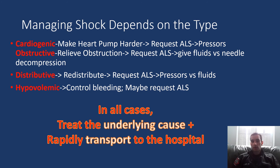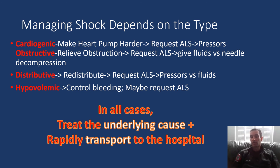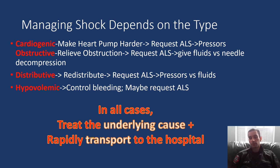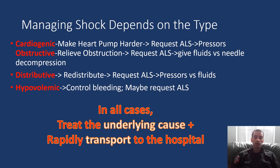For obstructive shock, the treatment is to relieve the obstruction. In cardiac tamponade, ALS can give fluids to slow the progression, but ultimately a physician needs to drain the effusion — so get to an ER. For tension pneumothorax, a paramedic can perform needle decompression. If you're close to the hospital, sometimes scooping and running is the best option — weigh where ALS is versus where the hospital is.